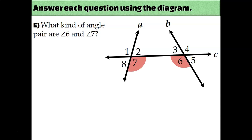What kind of angle pair are angles 6 and 7? Both of these angles are below transversal C, which makes them consecutive — they're on the same side of the transversal. And they're in between lines A and B, which makes them interior. So these would be called consecutive interior angles.